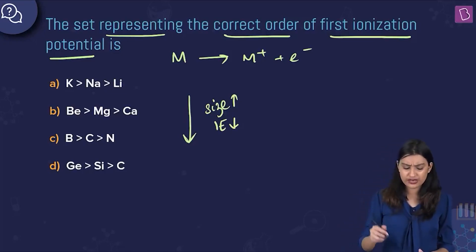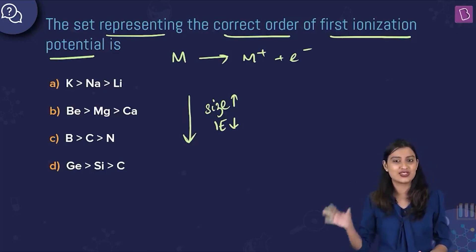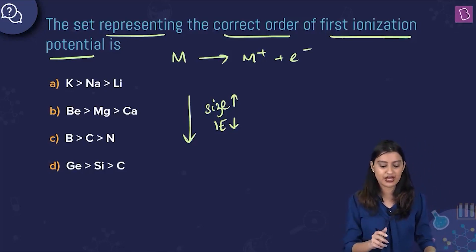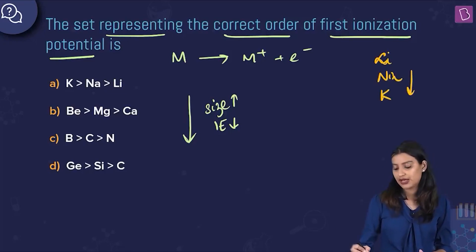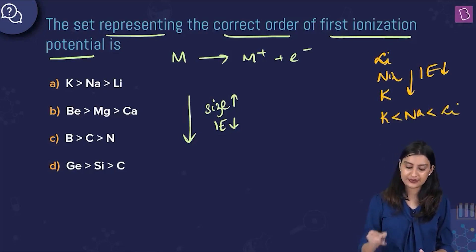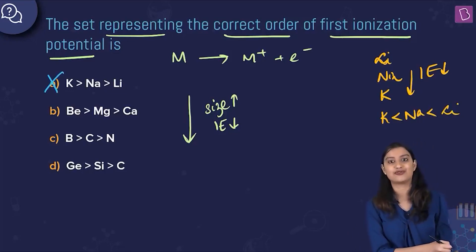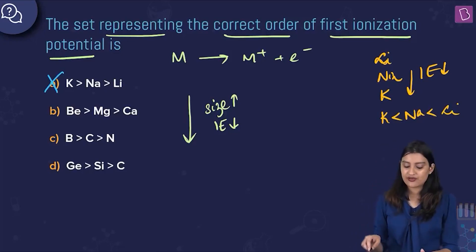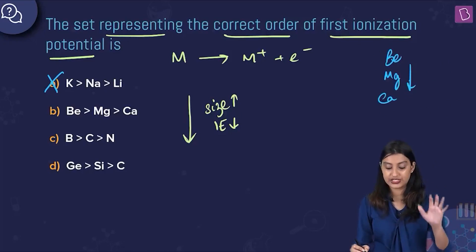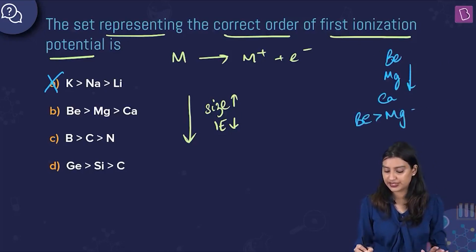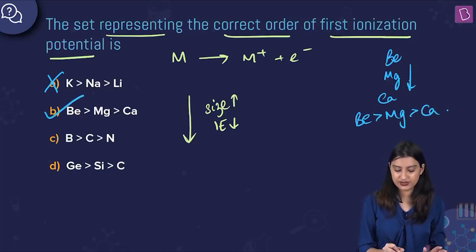Option A says K > Na > Li. Going down group 1A — lithium, sodium, potassium — ionization energy decreases, so potassium has the least, then sodium, then lithium. The order suggested is the exact opposite, so this is incorrect. Option B says Be > Mg > Ca, which are group 2A elements. As you go down, ionization energy decreases, so the correct order is Be > Mg > Ca. This is the order given, so option B is correct.